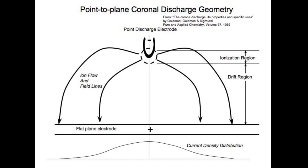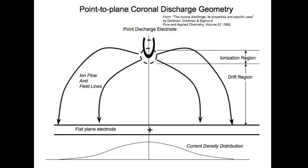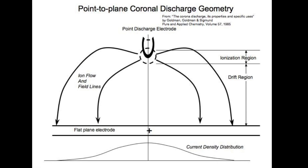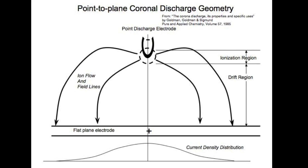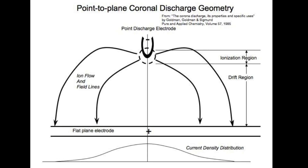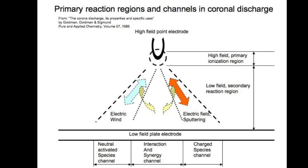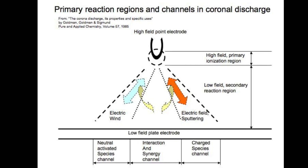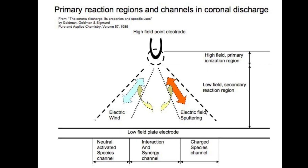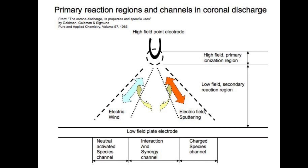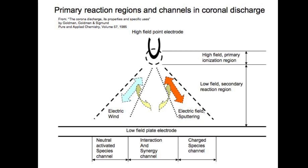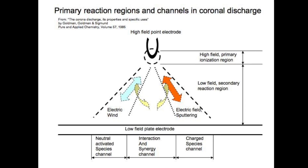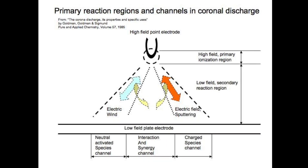Consensus science has attributed the electrical charge buildup in thunderstorms to "static charge" from colliding rain and ice. One flaw in this idea is there is nothing static anywhere, at any time, in any place in a thunderstorm. Everything moves, and that means charge too. And that means one undeniable thing: electric current. To not model a thunderstorm as such flies in the face of reason.